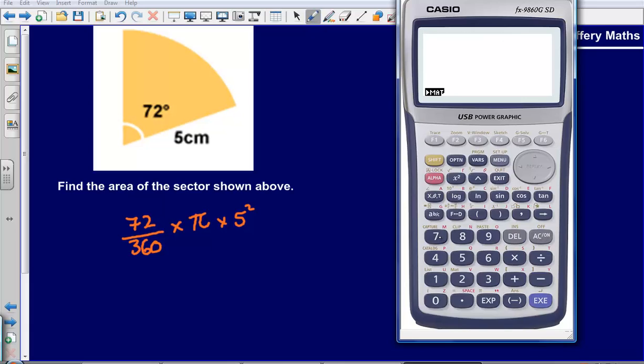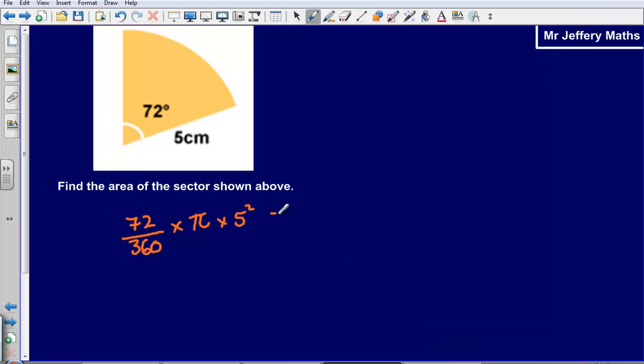So plug this into my calculator, 72 divided by 360 multiplied by π multiplied by 5 squared, and that is going to give me an answer of 15.7. So I am just going to give my answer to 3 significant figures and so that would be 15.7 cm². And that would be the final answer.